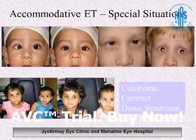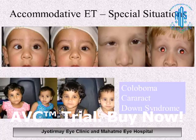The principle that extended complete cycloplegia can differentiate an accommodative from a non-accommodative component also holds true in patients with coloboma or albinism. For example, one child with infantile esotropia shows no resolution under cycloplegia, while the elder sibling — with accommodative esotropia — resolves completely under cycloplegia. So one child has accommodative esotropia and another has infantile esotropia within the same family.